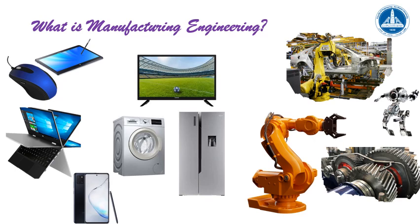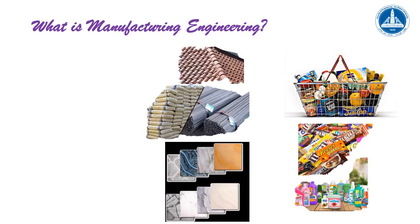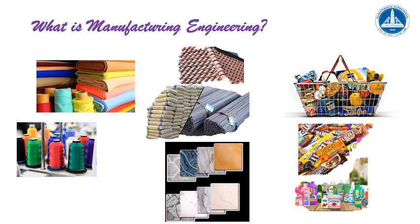We can also manufacture any electronic component — mobiles, tablets, computers, all this stuff. The manufacturing engineer also manufactures consumer goods. Consumer goods is anything you are going to purchase from supermarkets, like detergents, like food. A lot of our graduates are working in food manufacturers in Egypt or outside. We also manufacture building materials — cement, tiles, ceramic tiles, the steel which is used in buildings.